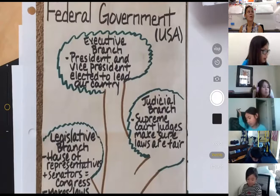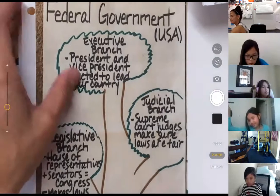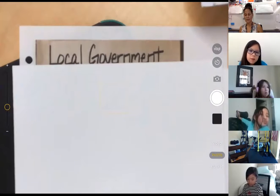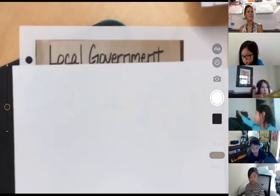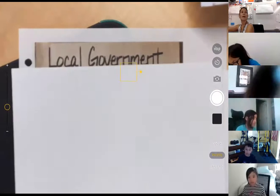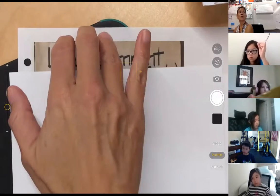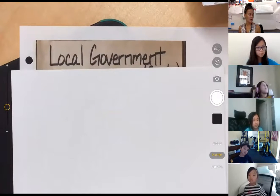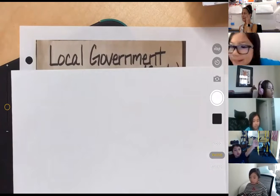Now we're going to take it local — we're going to talk about local government. Our local government being specifically the city of Sacramento, California, that is where we live. On your blank pictorial inside your binders, you should all have that in front of you now. We're going to talk about our local government for a few minutes.